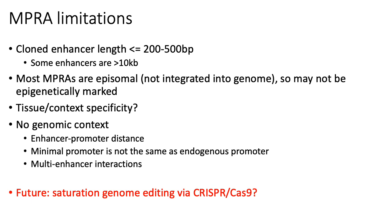A number of people have thought of workarounds around this. One direction the field seems to be moving is towards what's called saturation genome editing — the idea that you could endogenously gene-edit different enhancer sequences into pools of cells and then use single-cell RNA sequencing to measure readouts of your enhancer sequences. That's one potential way around some of these MPRA limitations.